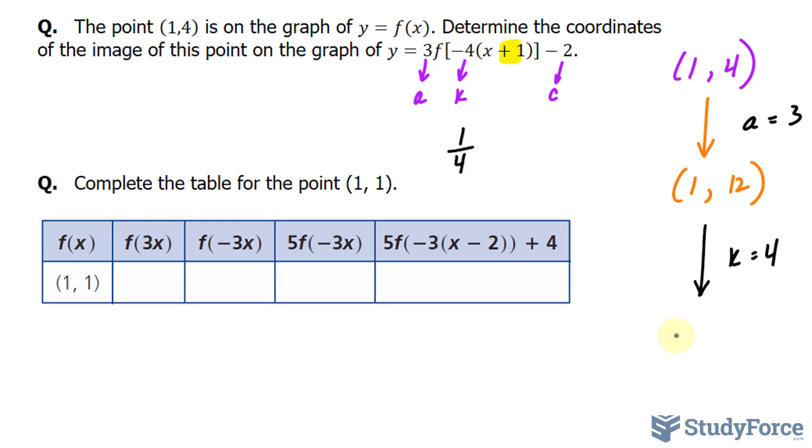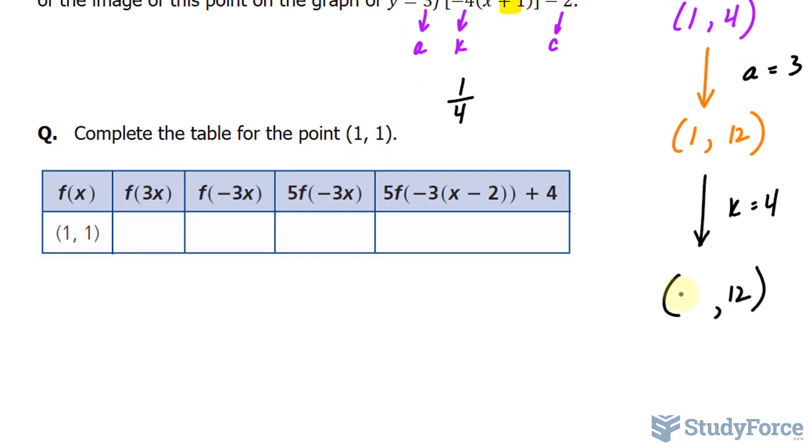Now, whether it be a horizontal compression or stretch, these only apply to the x coordinate. The y coordinate remains the way it is. So the y coordinate will remain as 12, and we'll multiply 1 by a quarter, giving us 0.25. You may also write it down as a fraction as well.